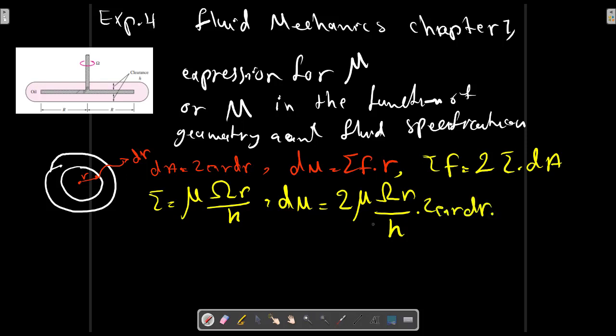It is dr, it is tau, it is dr and it is r. Let me write tau dr times r.